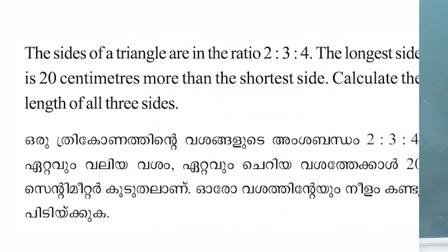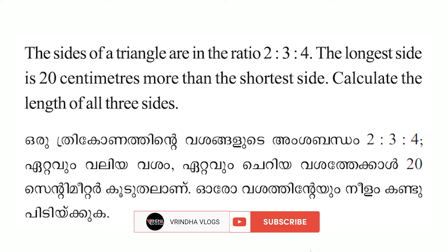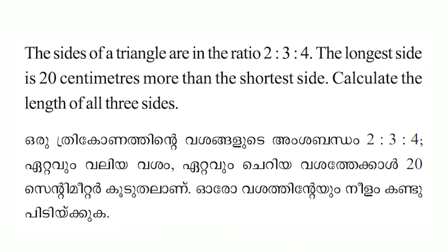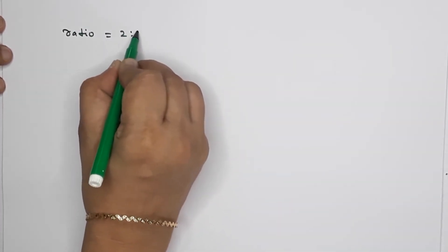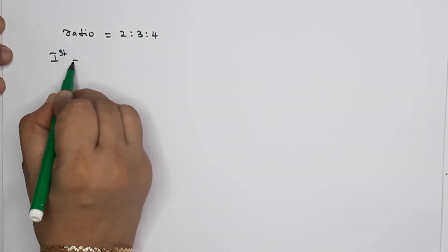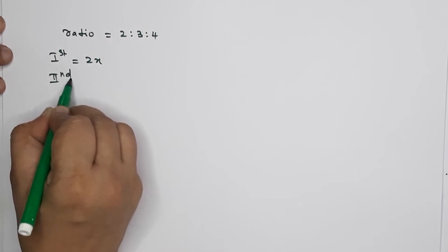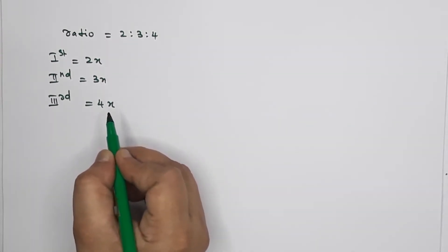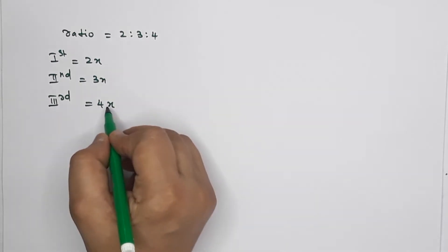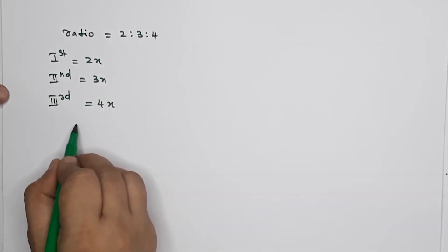We will do three problems. Page number 142, fifth question: The sides of a triangle are in the ratio 2 is to 3 is to 4. The longest side is 20 centimeters more than the shortest side. Calculate the length of all three sides. The sides are 2x, 3x, and 4x.